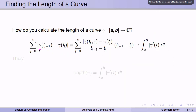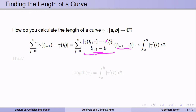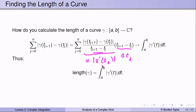To actually calculate the length, we look at the sum more carefully. We write |gamma(t_{j+1}) - gamma(t_j)| divided by (t_{j+1} - t_j), multiplied by (t_{j+1} - t_j). The first factor approximates |gamma prime(t_j)| when the t_j's are close together. As n goes to infinity, the sum converges to the integral from a to b of |gamma prime(t)| dt. So the length of gamma equals the integral from a to b of |gamma prime(t)| dt, valid for any smooth or piecewise smooth curve.